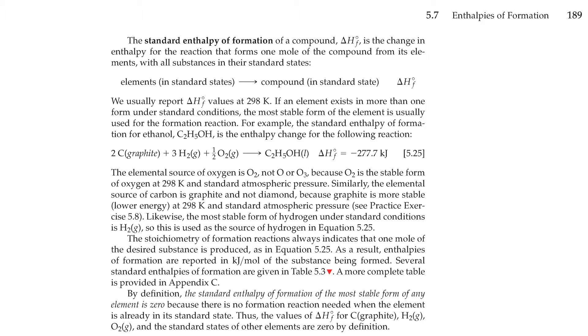The stoichiometry of formation reactions always indicates that one mole of the desired substance is produced, as in equation 525. As a result, enthalpies of formation are reported in kilojoules per mole of the substance being formed. Several standard enthalpies of formation are given in table 5.3. A more complete table is provided in appendix C.